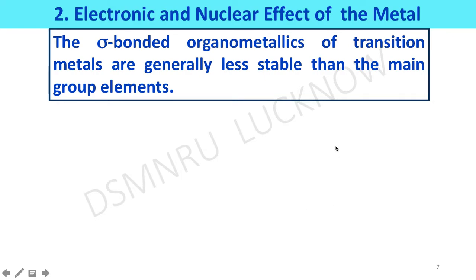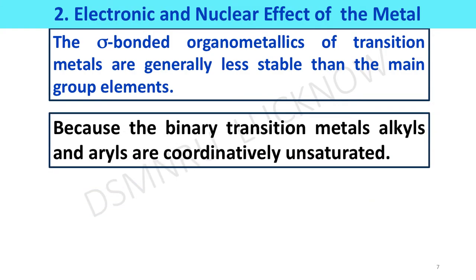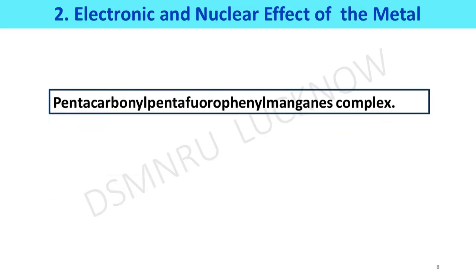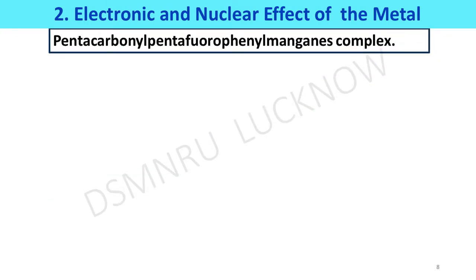Sigma-bonded organometallics of transition metals are generally less stable than those of main group elements, because binary transition metal alkyls and aryls are coordinatively unsaturated. This problem is overcome by forming complexes with Lewis bases like ether, phosphine, sulfide, arsine, alkoxide, and halide ions. Additionally, back-bonding also enhances the electron density between the metal and carbon, thereby increasing the stability of the compounds.